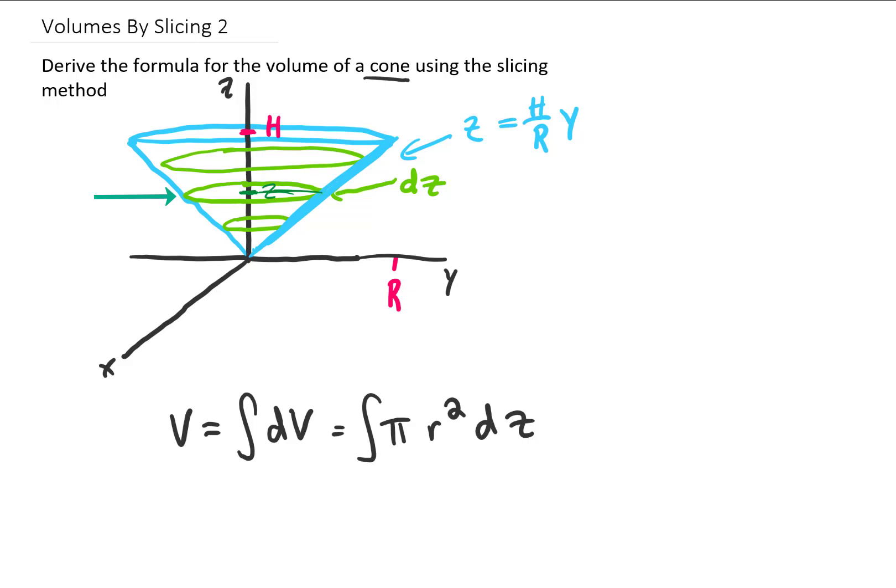Now for any given z value, the radius of the circle sliced out at that z value is just going to be this y value here. And we can see that this y value is going to be y equals R over H times z. So that is the radius of each one of the circles sliced out of this cone.